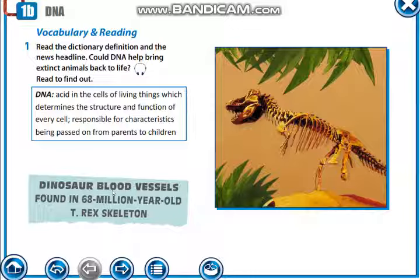Today, first of all, let's get introduced to what DNA is. I think you have already learned about it from your subject biology or anatomy. DNA exists in the cells of living things, which determines the structure and function of every cell, and is responsible for characteristics being passed on from parents to children. What do you think — could DNA help bring extinct animals back to life?